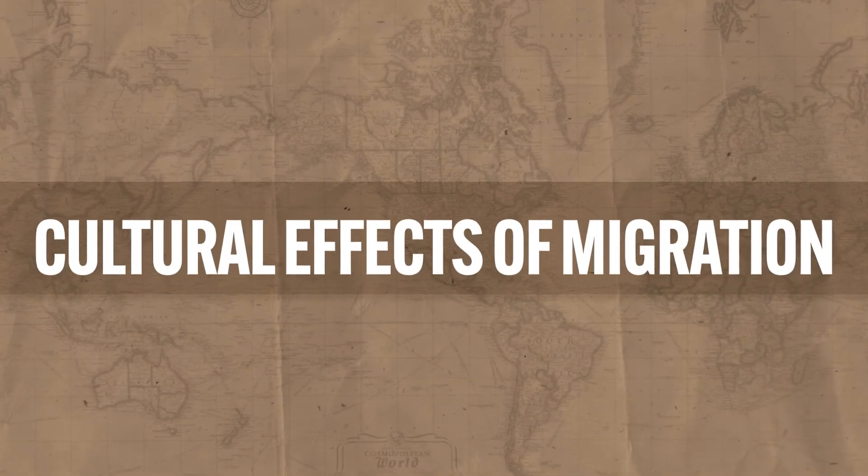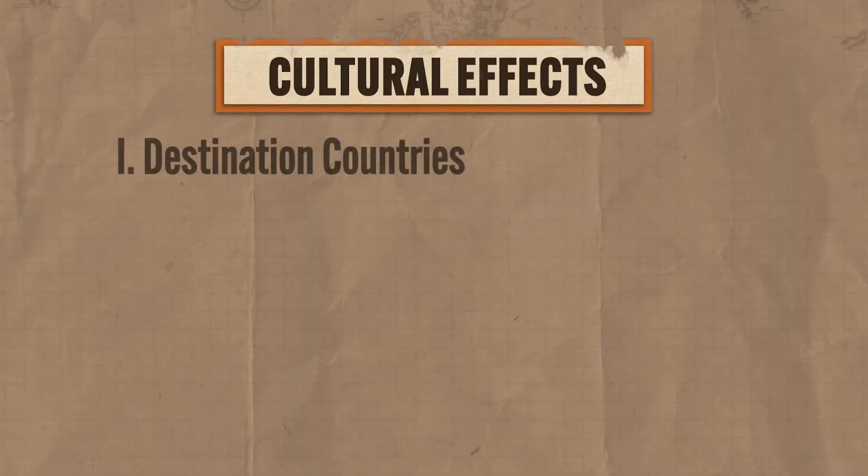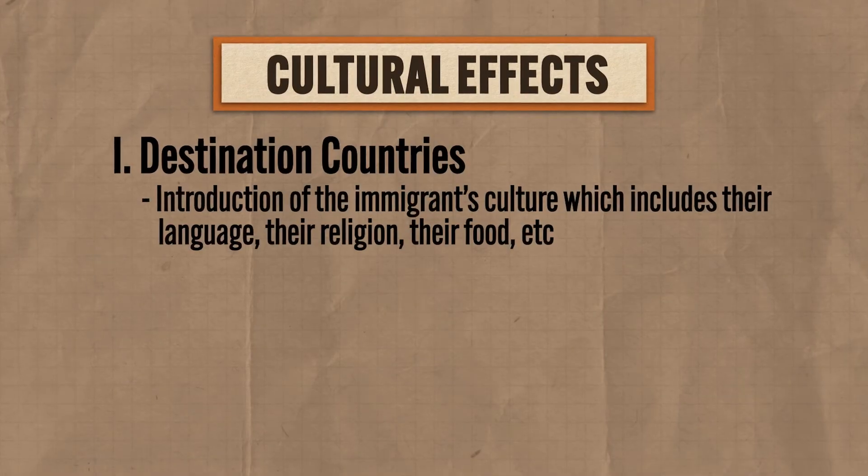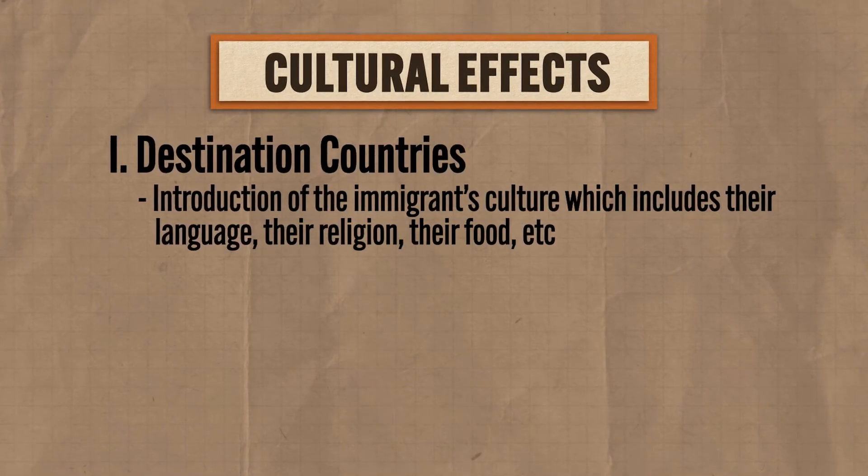Finally, let's consider the cultural effects of migration. In the destination countries, one major cultural effect is the introduction of the immigrants' culture, including their language, religion, and food. If you're watching this, you are likely in high school and required to take a foreign language. Well, about 75% of American high school students choose to learn Spanish. A big reason is because the largest portion of the immigrant population in America is Spanish-speaking, and that has had an enormous effect even on our education system — to which I say, bueno.